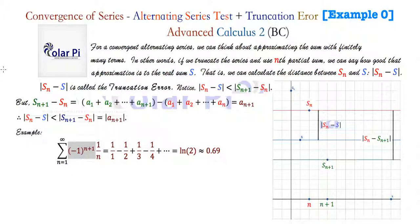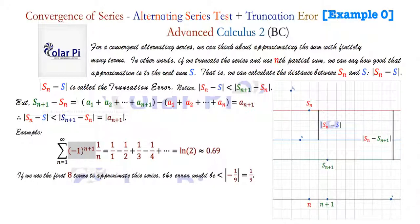Here's an example. We know that the alternating harmonic series — the famous alternating harmonic, at least in math circles — converges to the natural log of two. I have a video showing why, and I'll link that below. The natural log of two is approximately 0.69. So if we use the first eight terms of the alternating harmonic to approximate the natural log of two, then the error in using those eight terms would have to be less than the absolute value of negative one over nine, where negative one over nine is A_{N+1}. In absolute value that's clearly one over nine. So we're saying that using eight terms of the alternating harmonic series does as good a job as being less than one over nine away from the natural log of two.